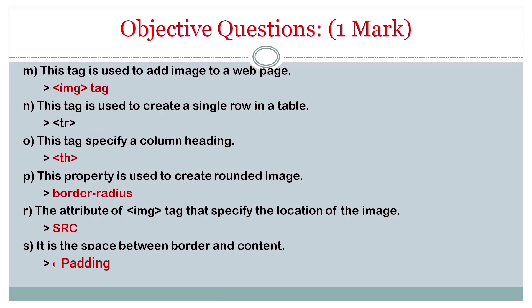The tag is used to add image to a web page - IMG tag. The tag is used to create a single row in a table - TR tag. The tag specifies column heading - TH. This property used to create rounded image - border-radius.